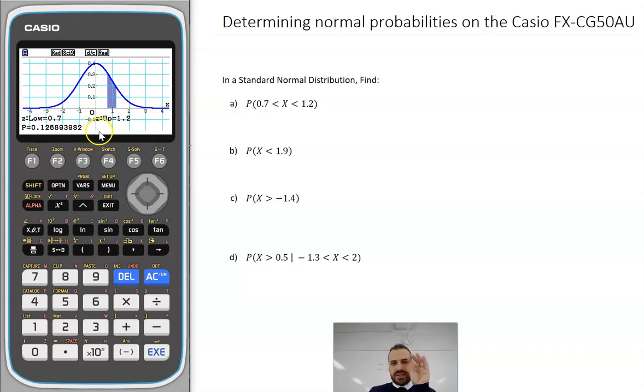Fantastic. You can see it's drawn us a nice little normal distribution. It's found the area under the curve between 0.7 and 1.2, and it's given me an answer of 0.12689. You really want to go to at least four decimal places here.